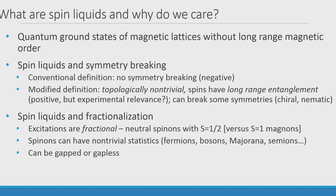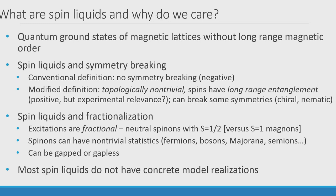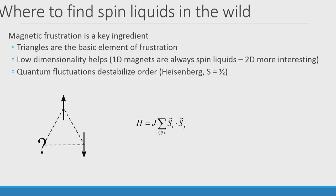Most spin liquids don't have concrete realizations yet — though it was long thought the Kitaev model wouldn't either. Our goal is to reach first a concrete model realization, then a concrete experimental realization. To find a spin liquid in the wild, the key ingredient is magnetic frustration. Consider a triangle with Ising spins and antiferromagnetic interactions: placing one spin up forces the next antiparallel, but then the third spin has no preferred orientation — that's the fundamental idea of frustration, and triangles are its fundamental unit.